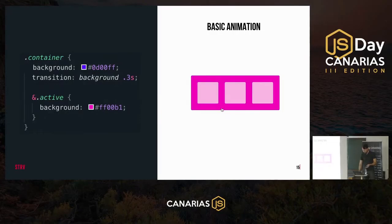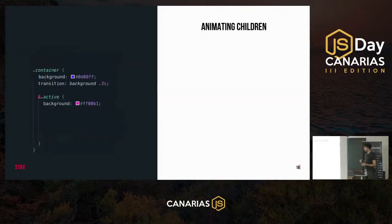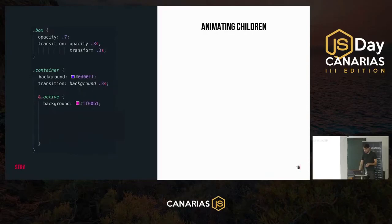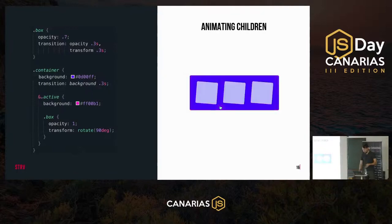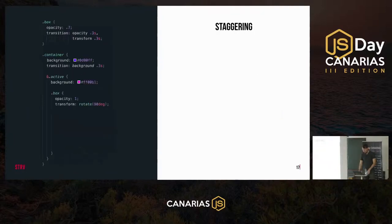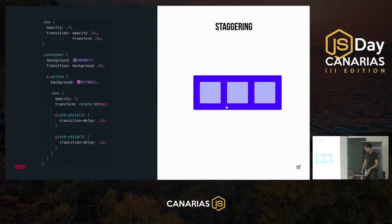We can make things more interesting and propagate the animation down to children. We define the same transition property for the box elements inside the container, and when a box is inside the active container we change its opacity and rotate it 90 degrees. We can also add staggering animation using pseudo-class selectors like nth-child to add a transition-delay property to the second and third boxes. With just a few lines of CSS we've created quite a complex animation.